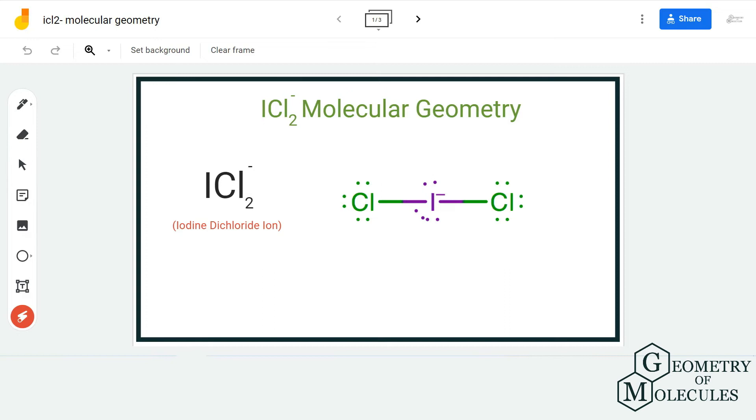Hi guys, welcome back to our channel. In today's video we are going to help you determine the molecular geometry of ICl2-. It is a chemical formula for iodine dichloride ion, and to understand its molecular geometry we first need to look at its Lewis structure.